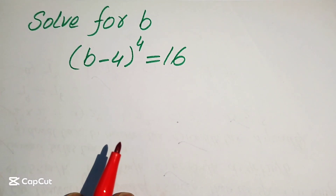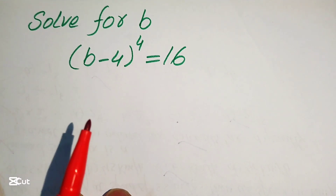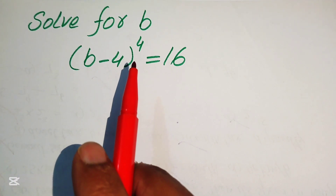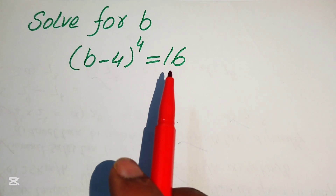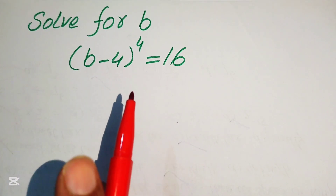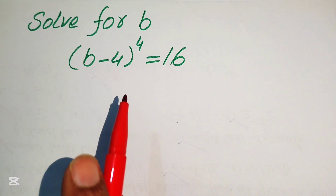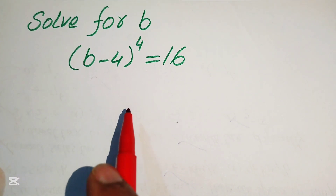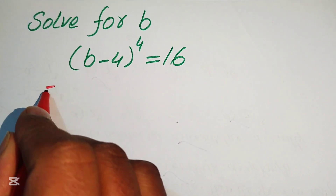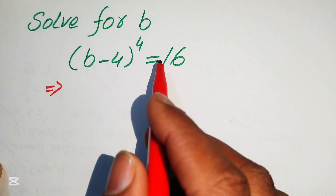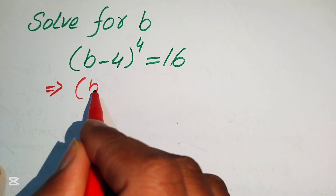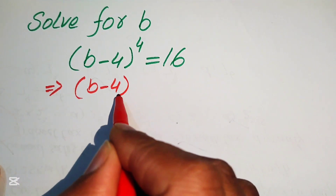Hello everyone, welcome to solve this nice algebra problem. Here we have (b minus 4) to the exponent 4 equals 16, and we solve this problem for the values of b. First we need to focus on the right hand side, where we have 16, and we write it as (b minus 4) to the power 4 equals 16.